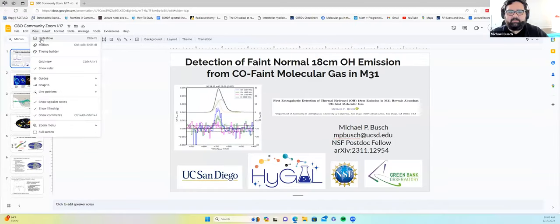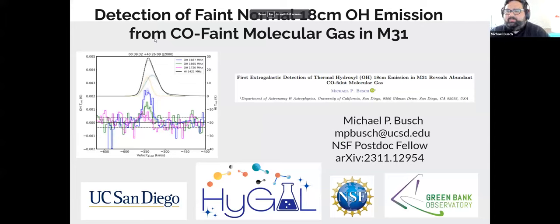Our speaker today is Michael Busch from University of California, San Diego. He is speaking to us on detection of faint normal 18-centimeter OH emission from CO-faint dark molecular gas in M31. You will have an opportunity to ask questions through the Q&A button, and this presentation is being recorded for later viewing. Thank you for having me back on the GBO community webinars. I'm Michael Busch at UCSD. I'll be talking about the first extra-galactic detection of OH 18-centimeter emission from CO-faint molecular gas in M31.